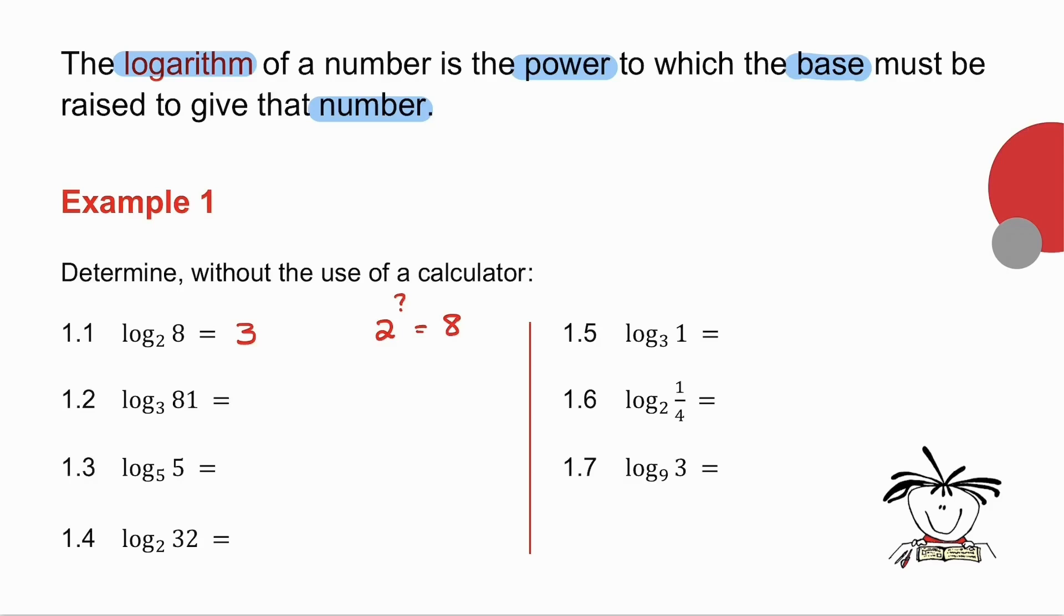In the next example, 3 to the power what gives 81 as an answer. Well it's 3 to the power 4 is 81. So that means that log to the base 3 of 81 is 4.